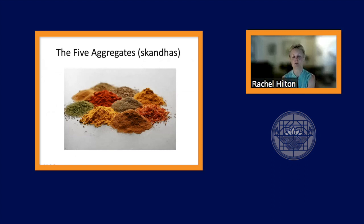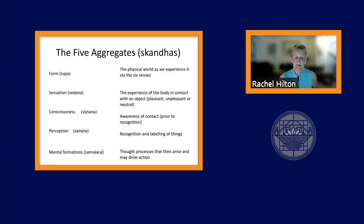This brings us to the five aggregates or skandhas. The word skandha is a Sanskrit word deriving from a word meaning aggregate or heap - think of those little piles of spices laid out in Indian markets. In Buddhist teaching, we are composed of five separate elements called skandhas. There's form (rupa), the physical world as we experience it via our six senses. Sensation (vedana), the experience of contact. Consciousness (vijnana), awareness of that contact. Perception (samjana), recognition and labeling of things. And mental formations (samskara), thought processes that arise and may drive action.